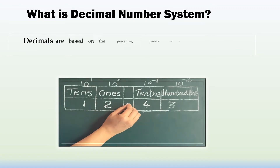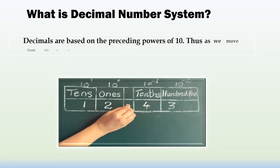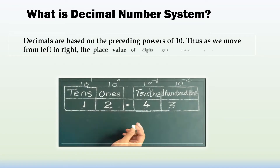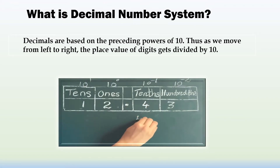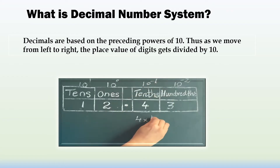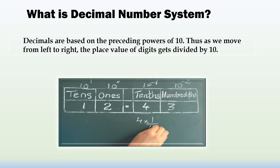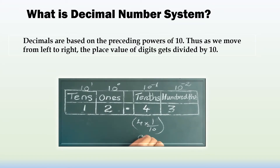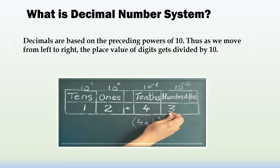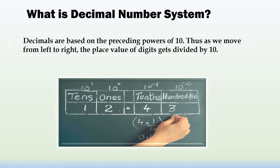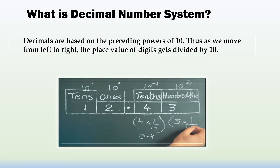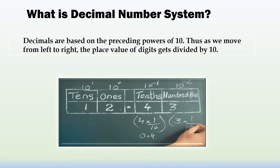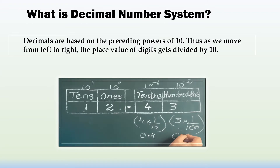The digits following the decimal point show values which are less than 1. The value of digit 4 is 4 into 10 to the power negative 1, which we can write as 1 by 10, so 4 by 10 equals 0.4. The value of digit 3 is 3 into 10 to the power negative 2, which is 1 by 100, so 3 by 100 equals 0.03.